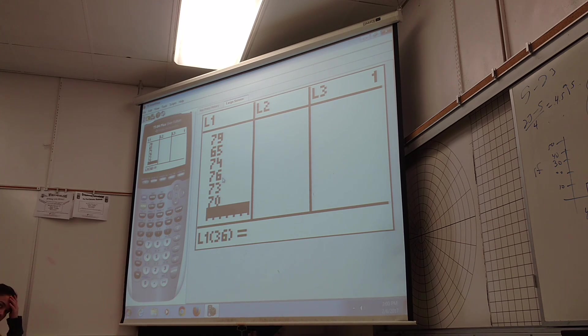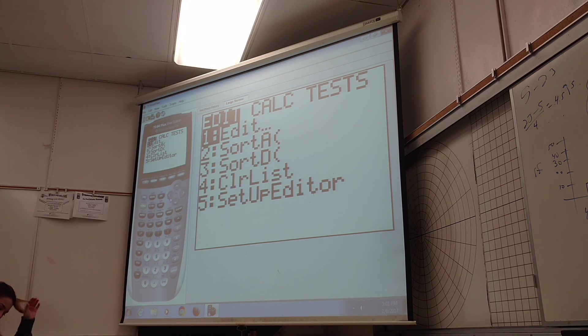So the very first thing, the most basic thing they should be able to do with data is to sort the thing. So hit stat. Now what's the difference with those two sorts? One starts from the highest one. Good. I love it.